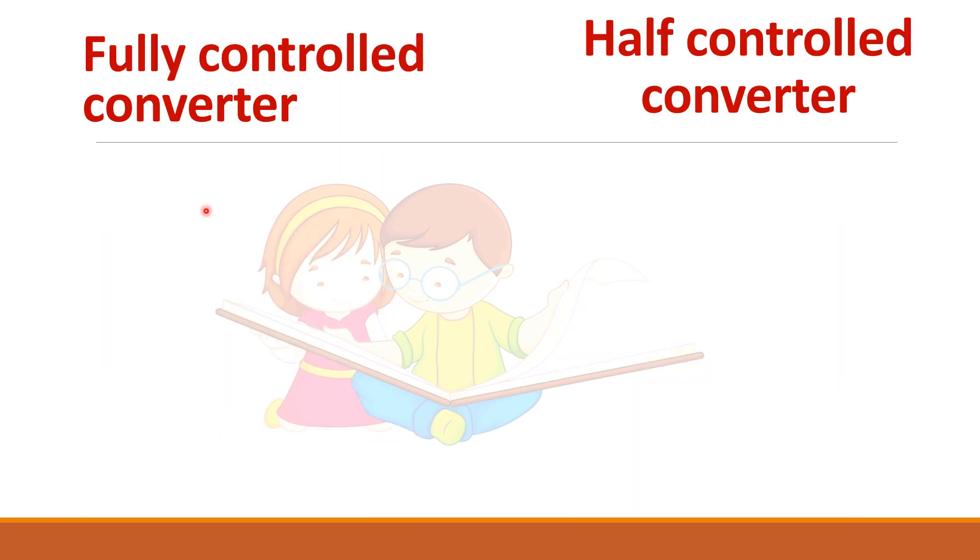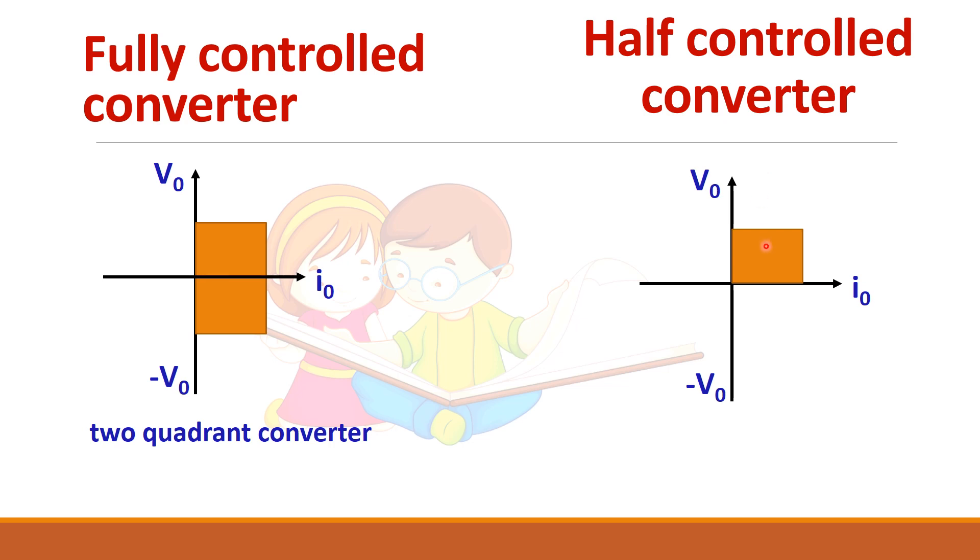And another difference is that this fully controlled rectifier can operate in two quadrants that is motoring mode and braking mode is possible. Whereas in half controlled or semi converter only one mode is possible because you cannot change the polarity of the output voltage in half controlled converter.